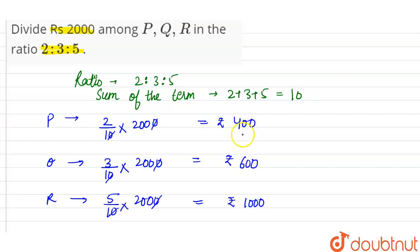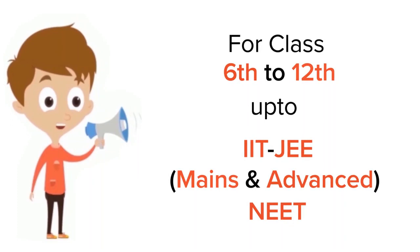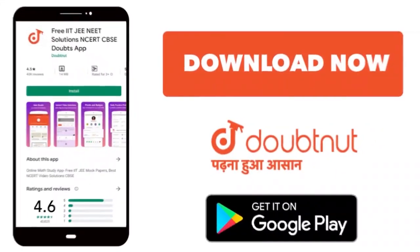So rupees 2000 is divided among P, Q, R in 400, 600, and 1000 ratio. For class 6 to 12, IIT-JEE and NEET level, trusted by more than 5 crore students, download Doubtnet app today.